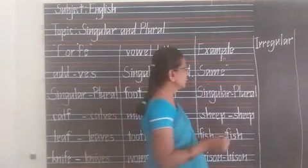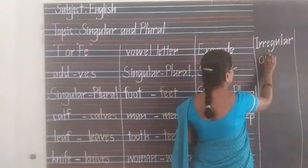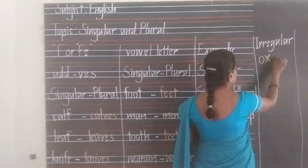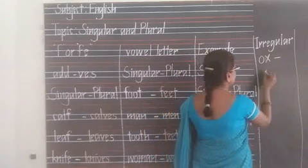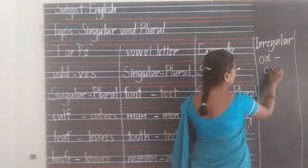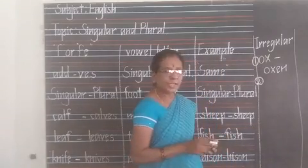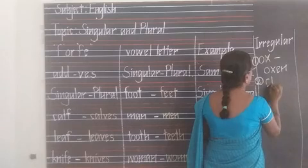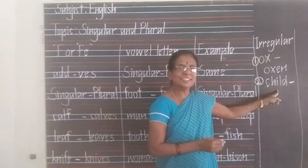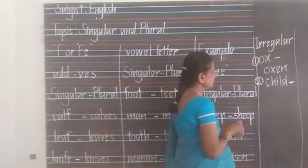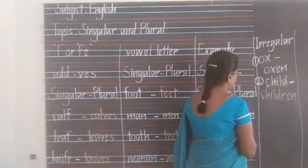Here are more nouns where the singular and plural are different irregular forms. O-X, ox, is a singular noun — its plural is O-X-E-N, oxen. Next: C-H-I-L-D, child, is a singular noun — its plural form is C-H-I-L-D-R-E-N, children. Also: Q-U-I-Z, quiz — its plural is Q-U-I-Z-Z-E-S, quizzes.